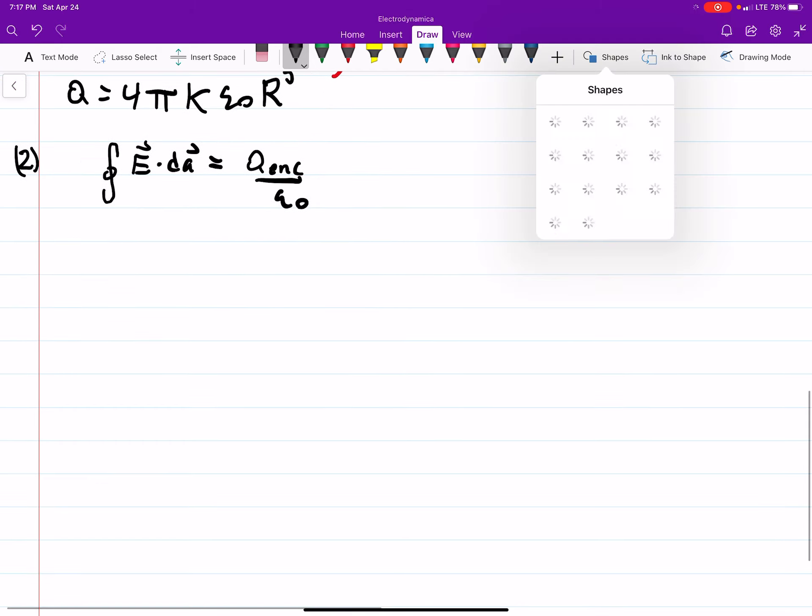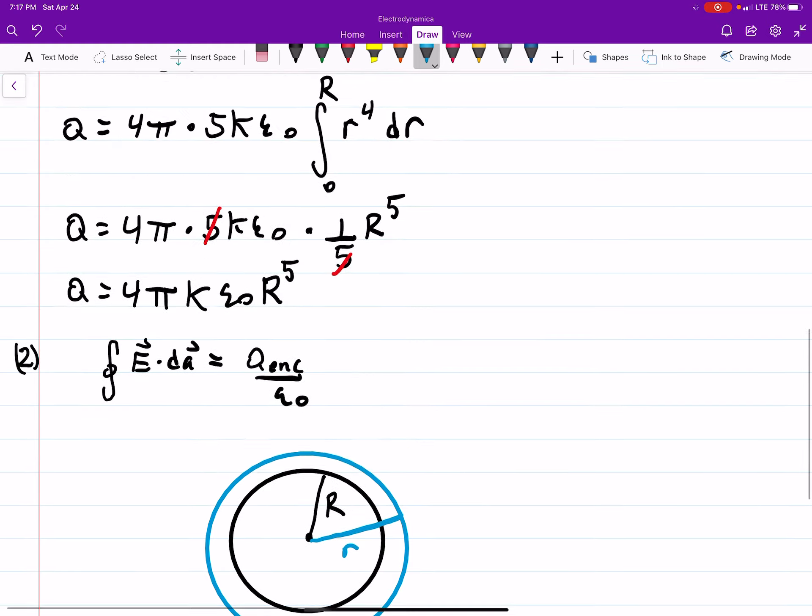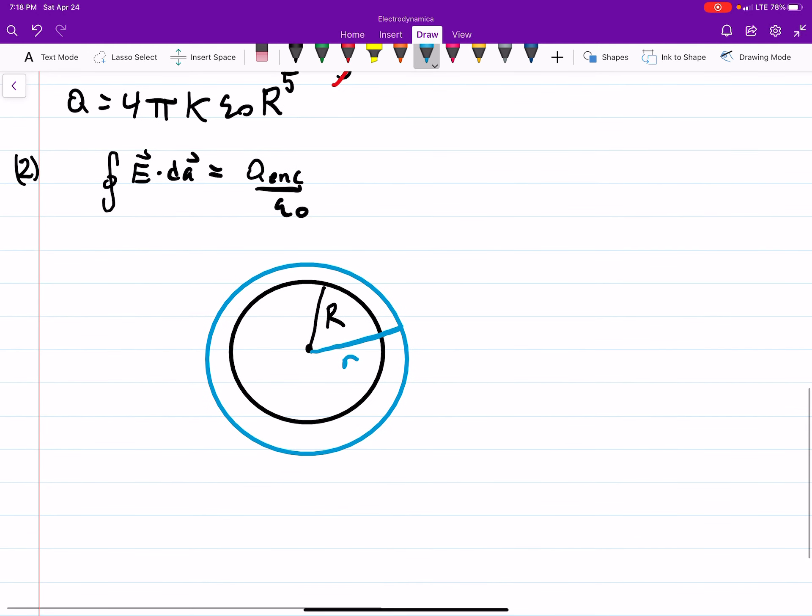So if we were to draw this out, I like to draw out any Gauss problem. We'll call this point here R and this part here little r. The reason why I drew the Gaussian surface outside the sphere is because I want to know the total charge inside. If I drew the Gaussian surface inside, then I wouldn't include everything inside the surface.